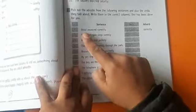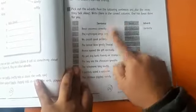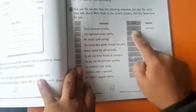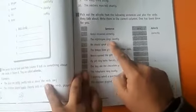Next one, here these sentences are given. You will write verbs in one column and adverbs in another. Like, Burnsey answered correctly. Which action is going on? Answered. How? Correctly. Same way, nightingale sings sweetly. Which action is going on? Sing. So you will write sing in this column and sweetly in this column. We should speak politely. Which action is going on? Speak. How? Politely, you will write here. This way you will do your worksheet. Still, if you have any problem, you can call me. Thank you.